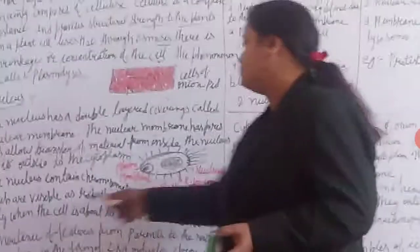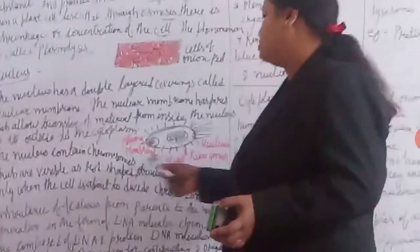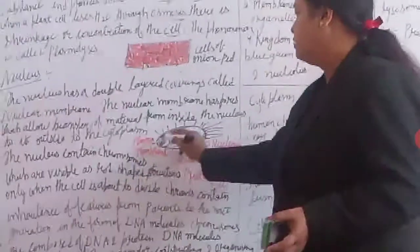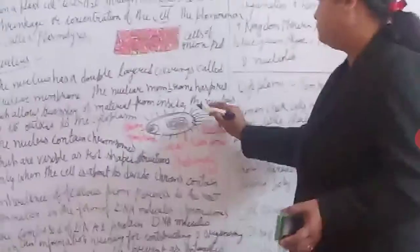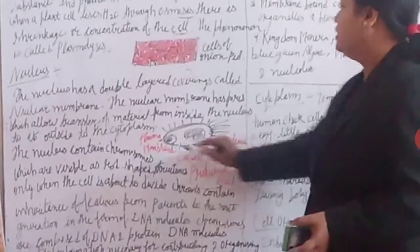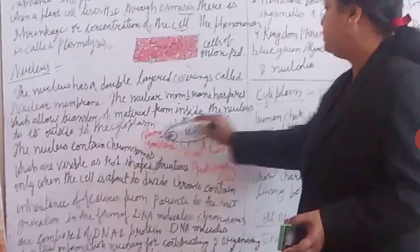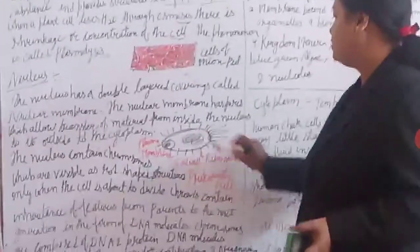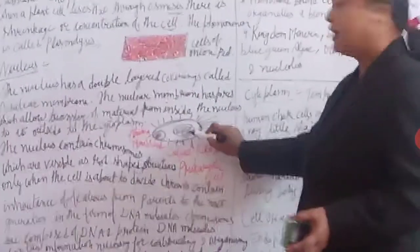The nucleus contains chromosomes which are rod-shaped structures. That is the plasma membrane — that is the outer covering body — nuclear membrane, and these are ribosomes. Three types of structures are prominent: plasma membrane, nuclear membrane, and chromosomes.